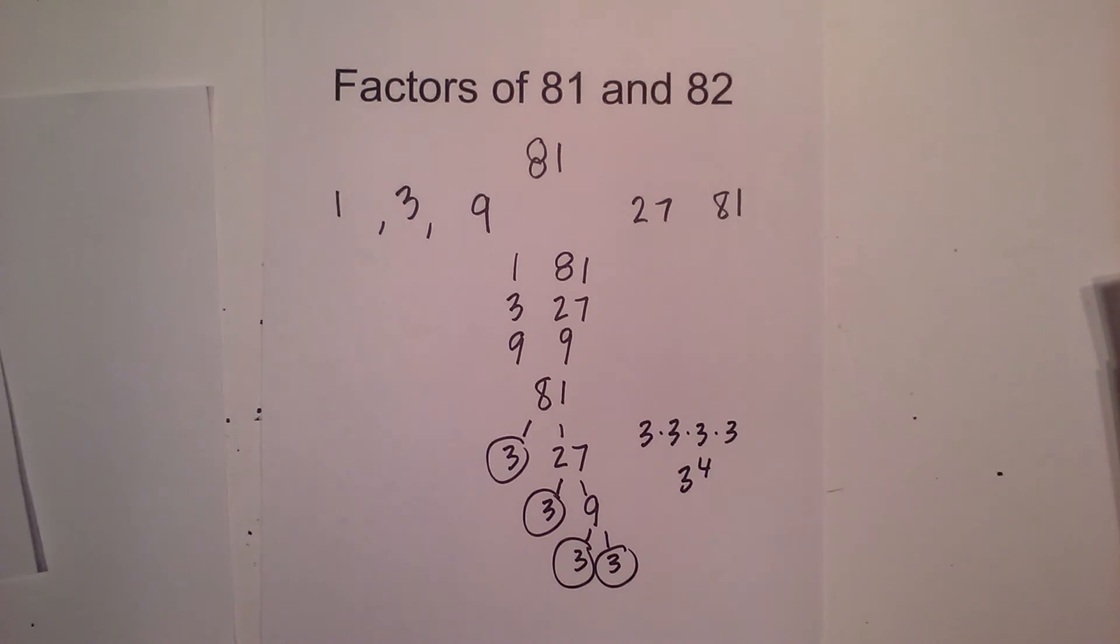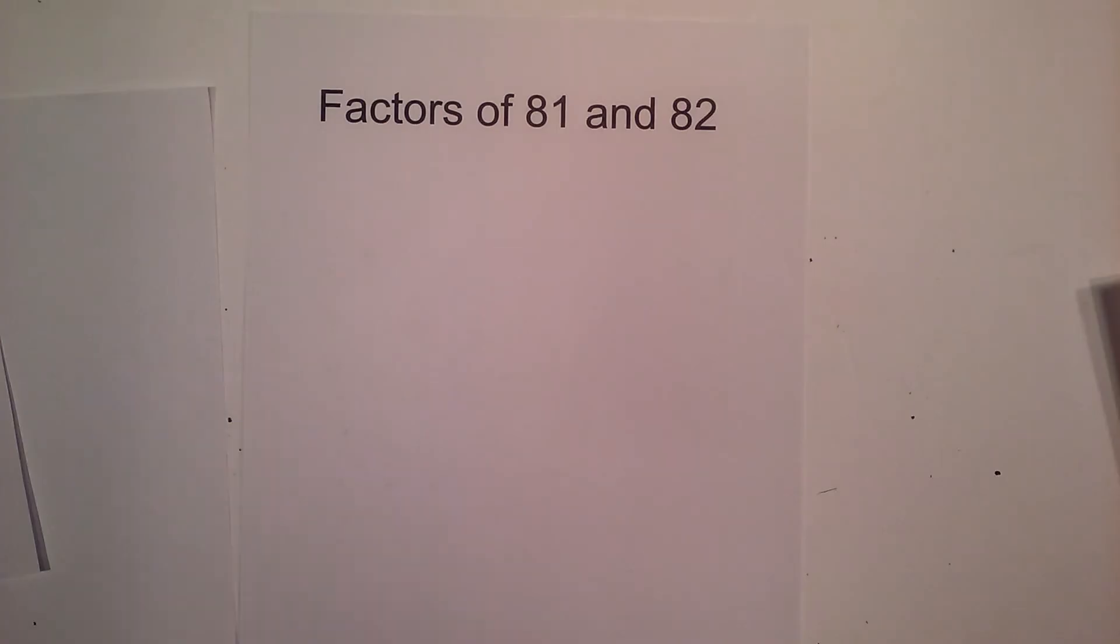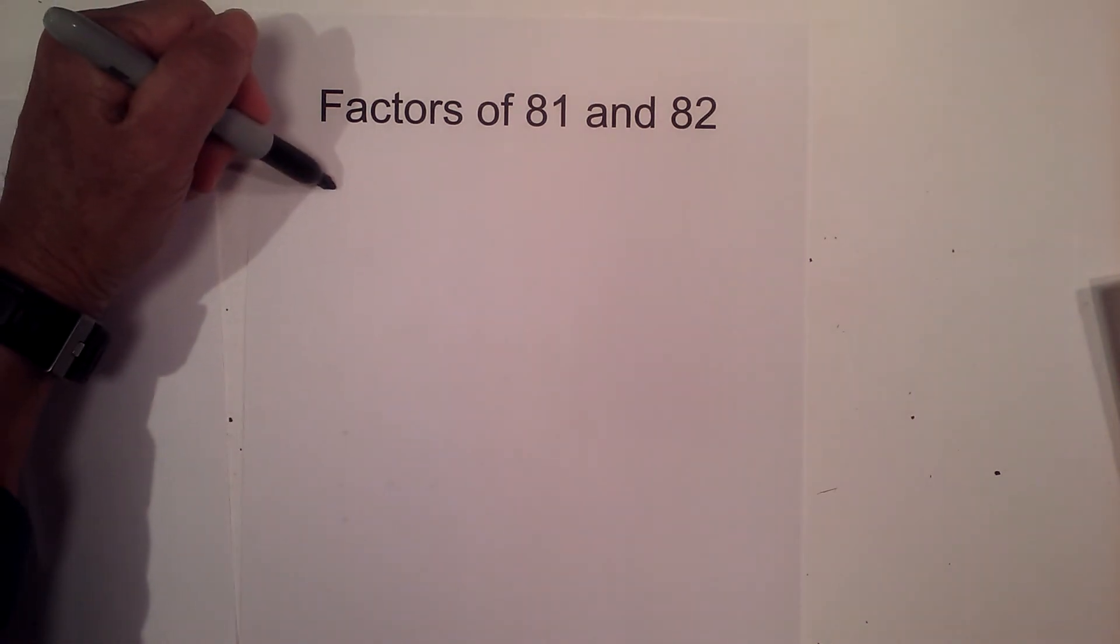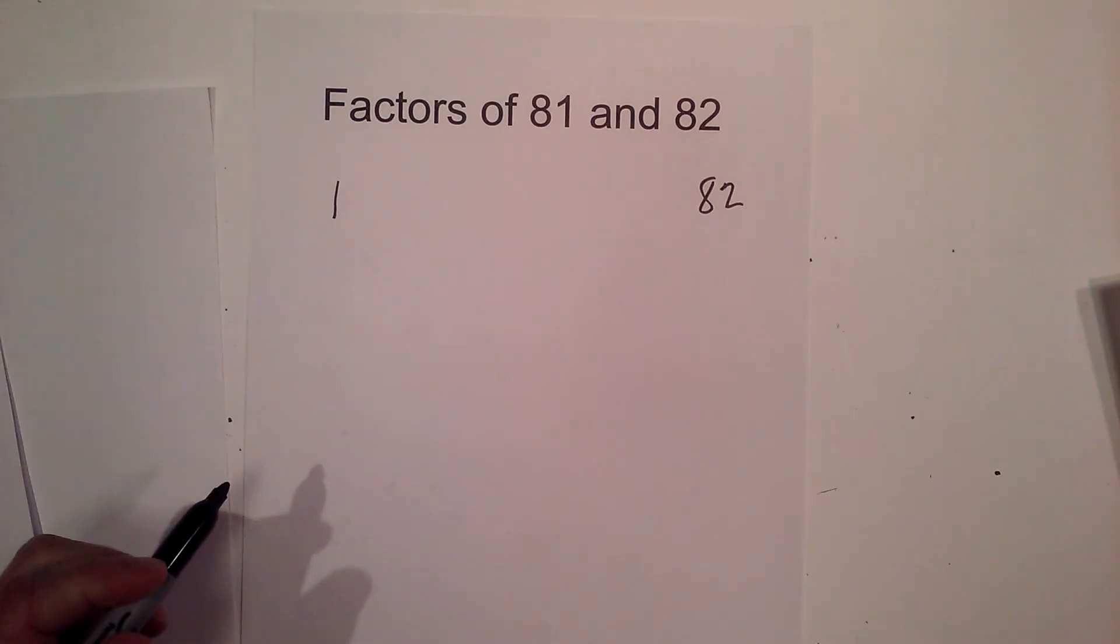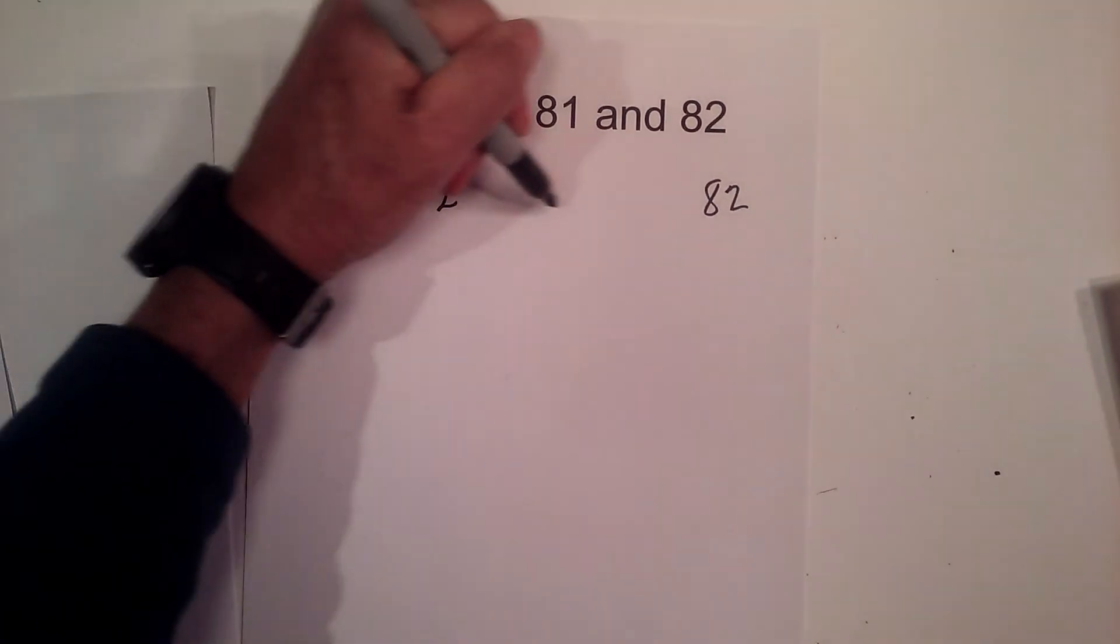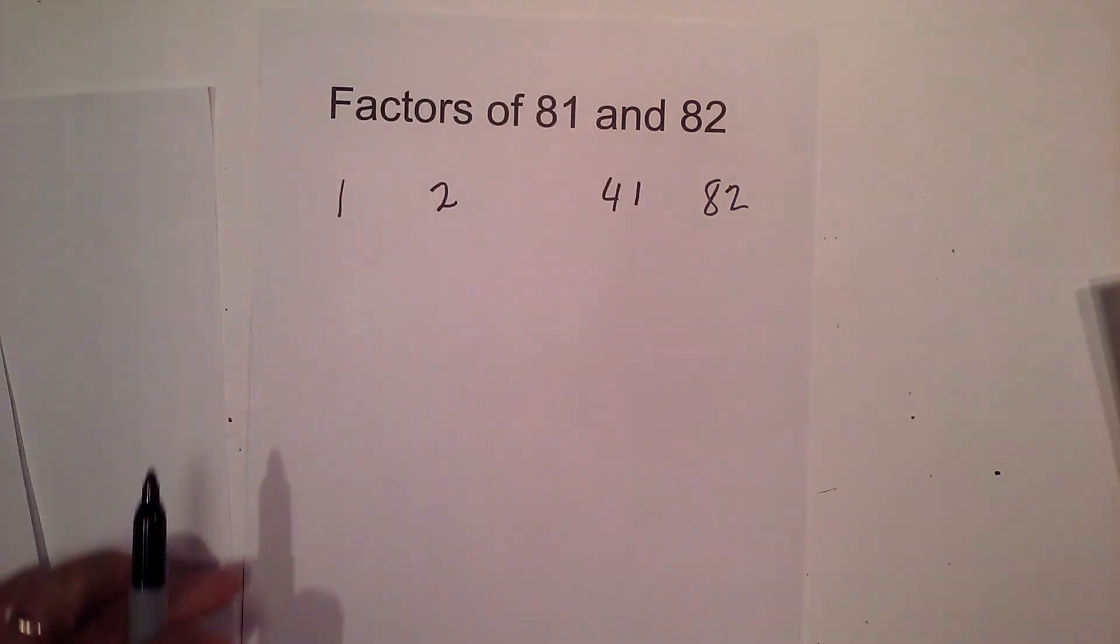Now let's look at 82. The factors of 82 won't take long. We have 1 times 82, and then we have 2 times 41. So these are the factors. If you'd like them in a pair, 1 times 82, 2 times 41.